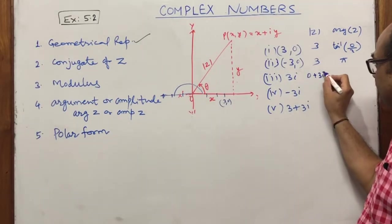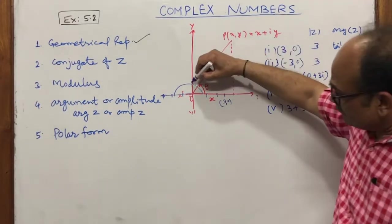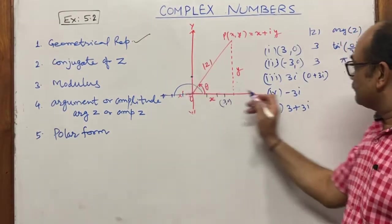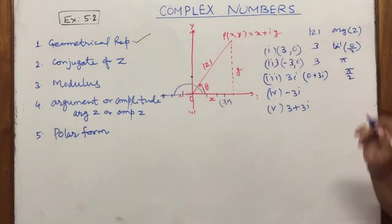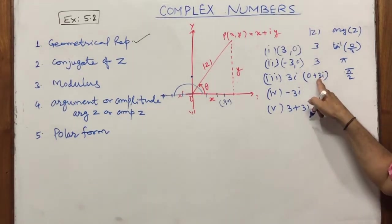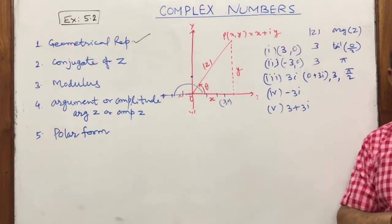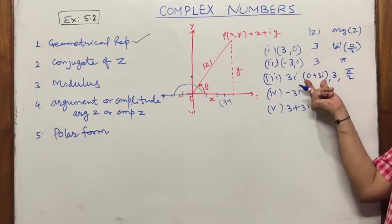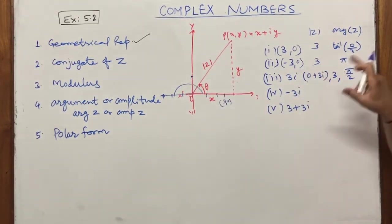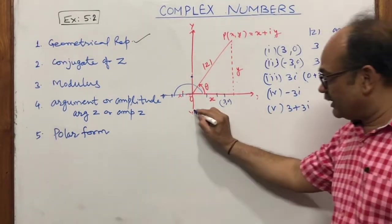For z = 3i (written as 0 + 3i), the point is at (0, 3). The argument is π/2, since it lies on the positive imaginary axis. The modulus is √(0² + 3²) = √9 = 3.